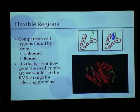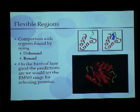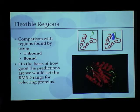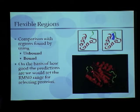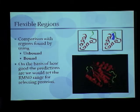After that we extract the flexible regions from the models and compare them with regions found using unbound and bound proteins. Every protein in our list has a bound structure as well as an unbound structure. The bound structure is bound to the ligand, and you can see the green parts would be considered flexible. We compare these green flexible parts from our models with the green parts in the bound and unbound structures.